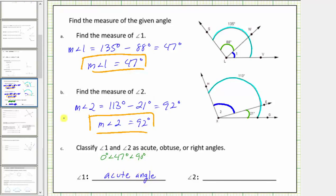Angle two measures 92 degrees. 92 degrees is between 90 degrees and 180 degrees — greater than 90 degrees and less than 180 degrees — and therefore angle two is an obtuse angle.